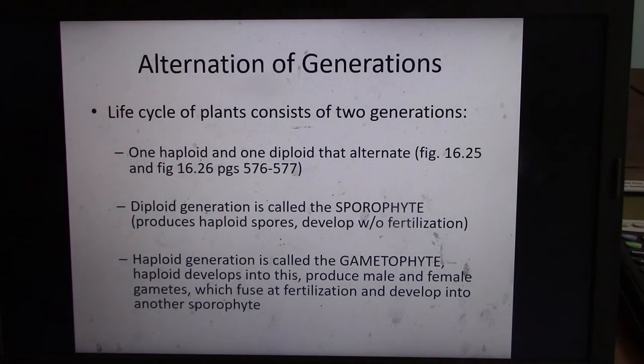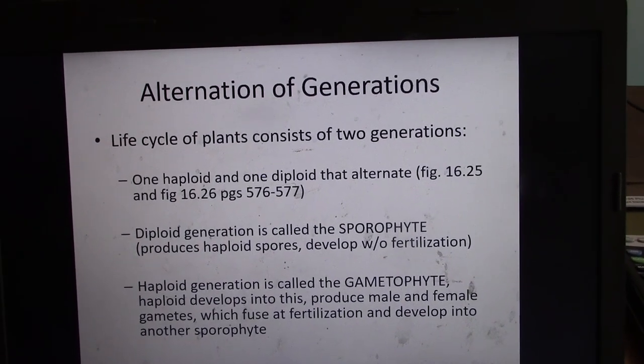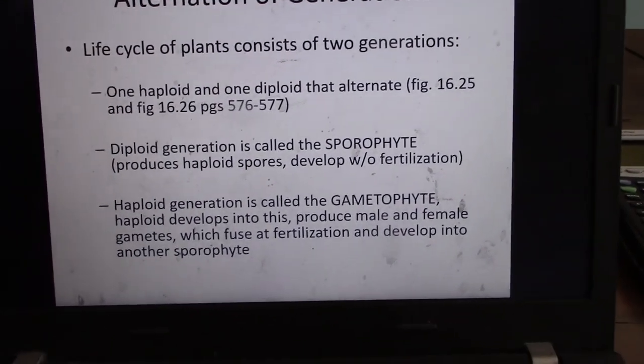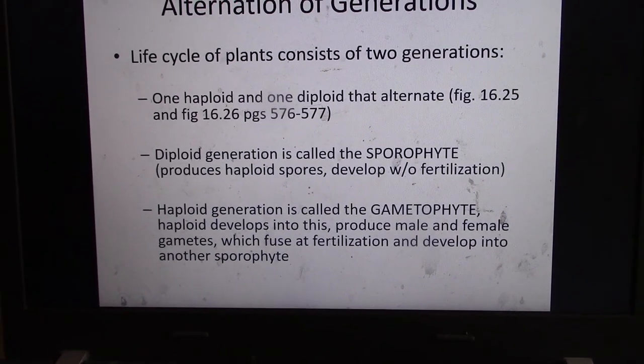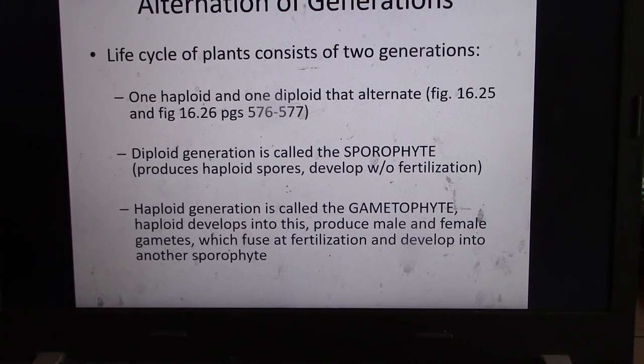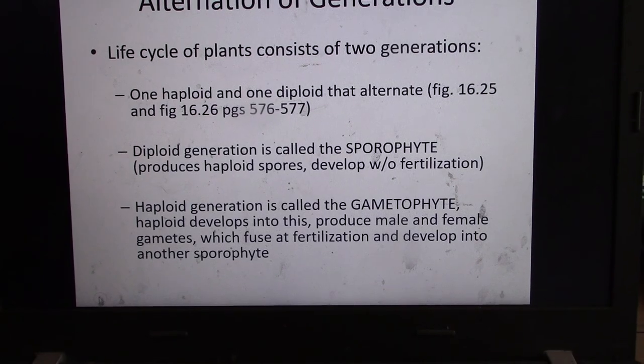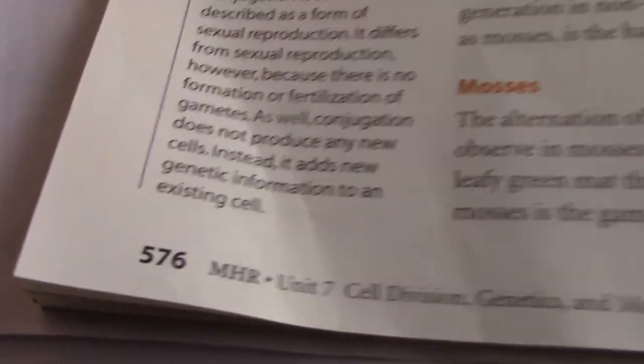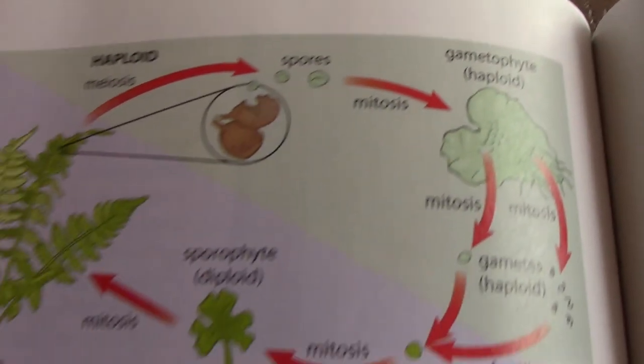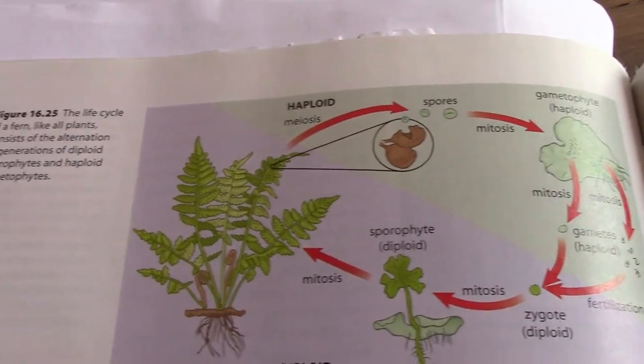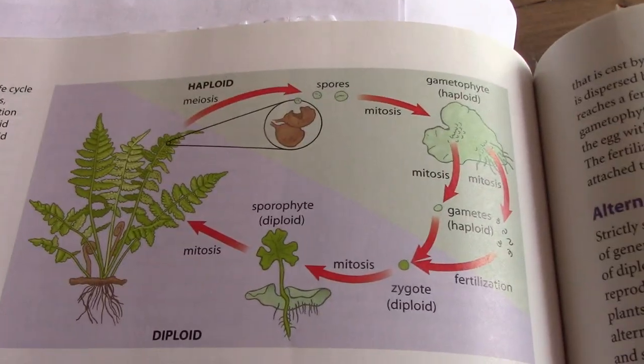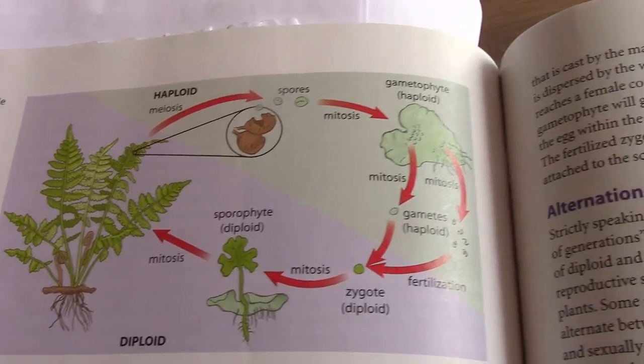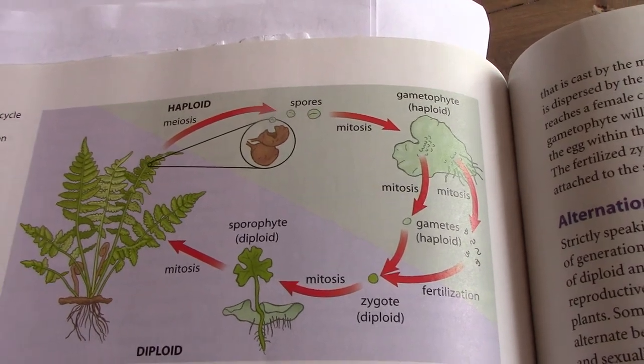Life cycles of plants consist of two generations, one's haploid and one diploid. The diploid generation is called the sporophyte and the haploid generation is called the gametophyte. Page 576 and McGraw Hill shows this. This is figure 16.25. Take a look at that. Sporophyte and haploid gametophyte.